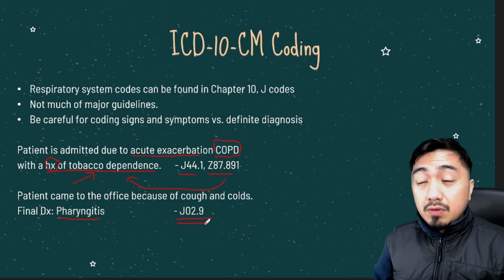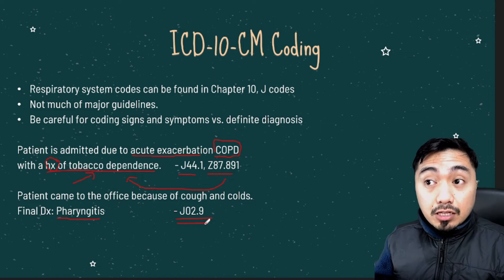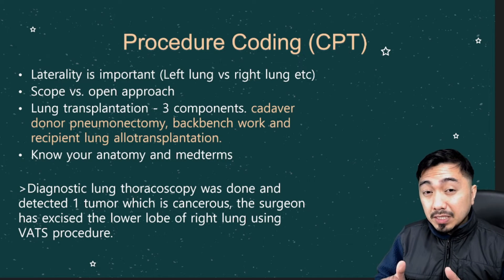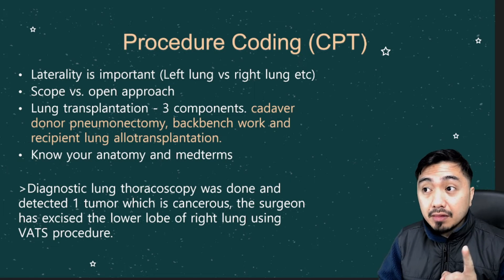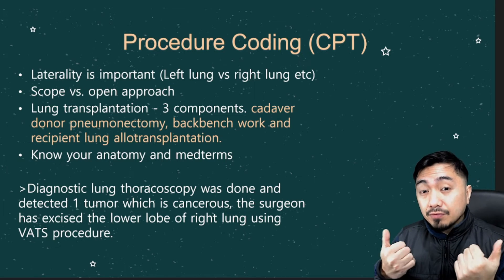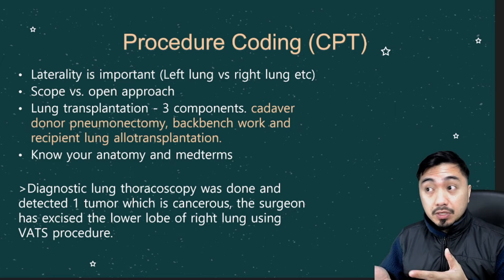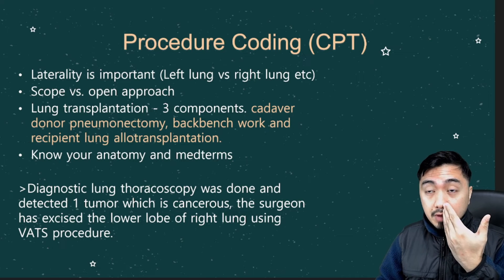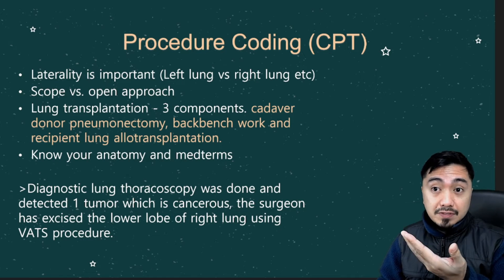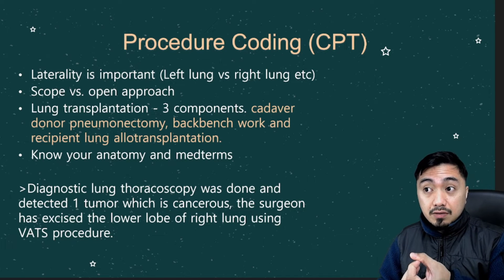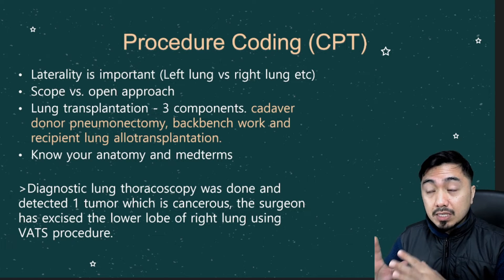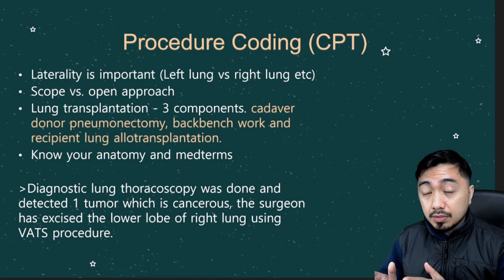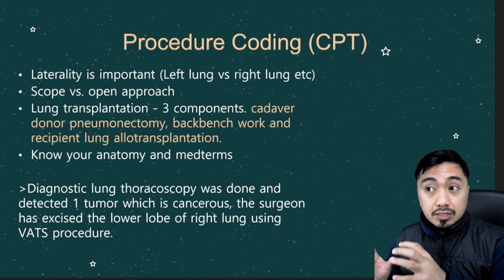This can serve as a helpful topic for your exam. Next will be procedure coding, or the CPT codes. Laterality is very important with this topic — you have to identify if the procedure will be done for the left or the right side, for example left lung versus right lung, or the right side of the sinus versus the left side. Next is scope versus open approach. For scope procedures, the diagnostic scope is already included with your surgical scope procedure.